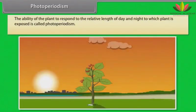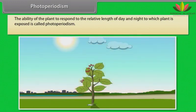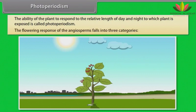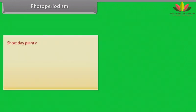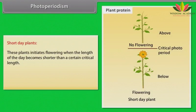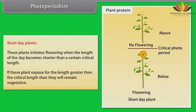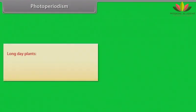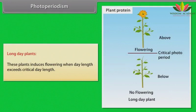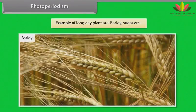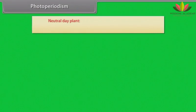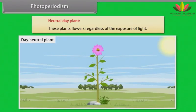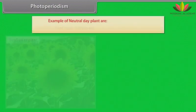The ability of plants to respond to the relative length of day and night to which the plant is exposed is called photoperiodism. The flowering response of angiosperms falls into three categories. Short day plants initiate flowering when the length of the day becomes shorter than a certain critical length; if exposed for a length greater than the critical length, they remain vegetative — examples are Cosmos and Dahlia. Long day plants induce flowering when day length exceeds the critical day length — examples are barley and sugar beet. Neutral day plants flower regardless of the exposure to light — examples are sunflower and tomato.